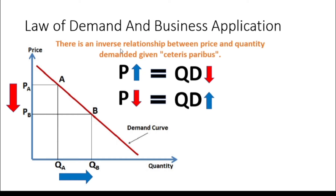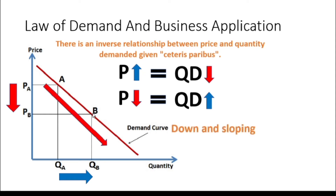The question is: why does the demand curve slope downward? In other words, why is it that when the price for a particular product is up, the quantity demanded for the same product or service is down, and vice versa?